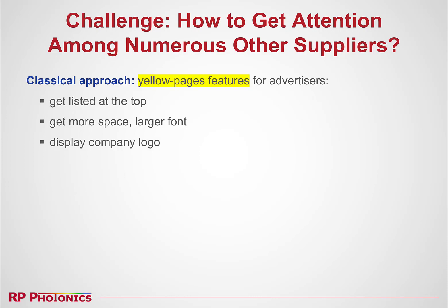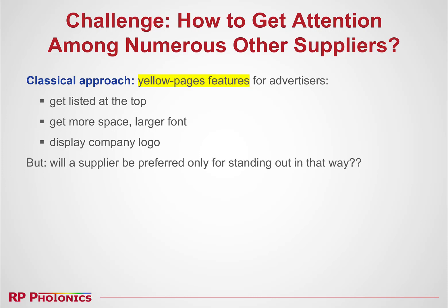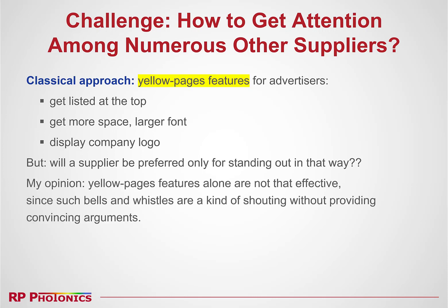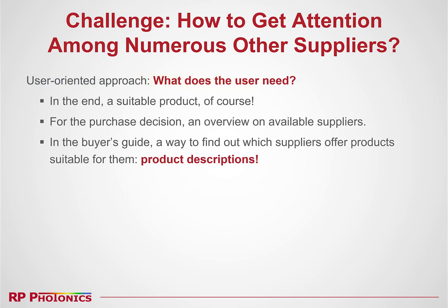The classical approach is to use yellow pages features for the advertisers, which means listing them at the top — they get more space, are shown with a larger font, and one displays their company logo. We do that. However, will a supplier be preferred only for standing out in such a way? My opinion is yellow pages features alone are not that effective. The reason is that such bells and whistles are a kind of shouting without providing convincing arguments. So I recommend to take a user-oriented approach — think about what exactly the user needs.